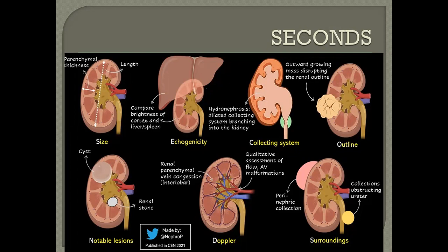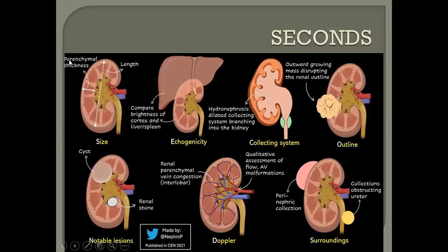S stands for size. The most appropriate way to get the size of the kidney is to measure the length from superior to inferior as outlined here. You can only get this image in longitudinal section, and in that same plane we are also able to see the parenchyma thickness. We appreciate the echogenicity by comparing with the liver — for the right kidney — or with the spleen for the left kidney.